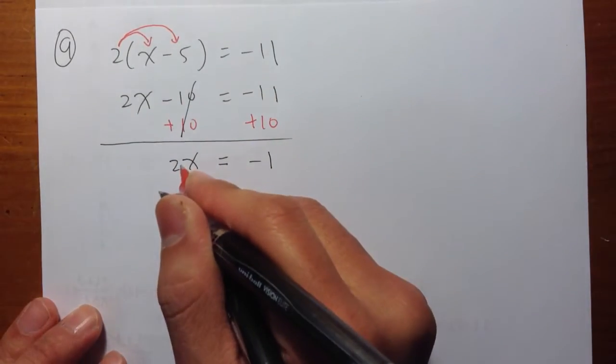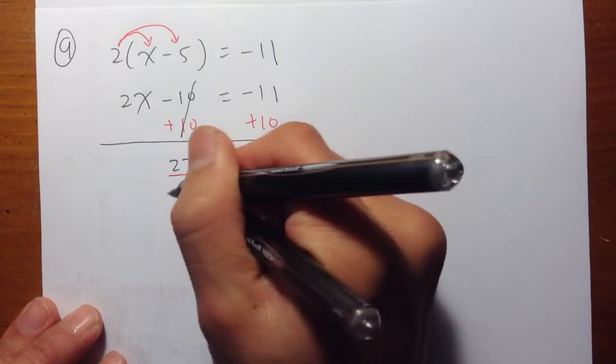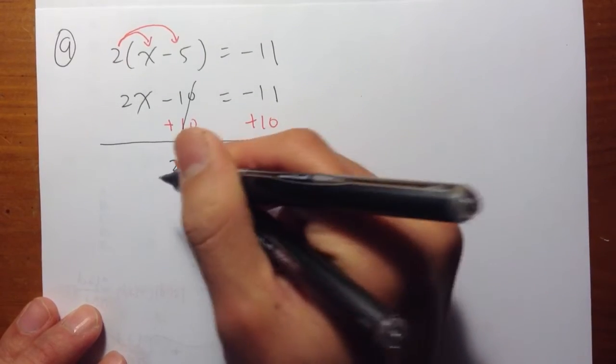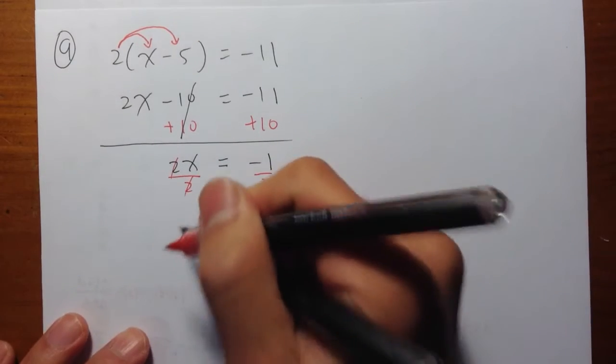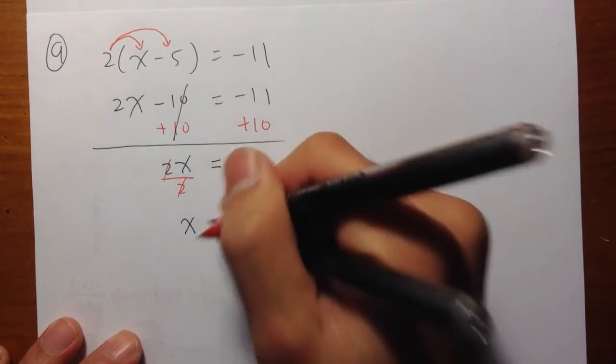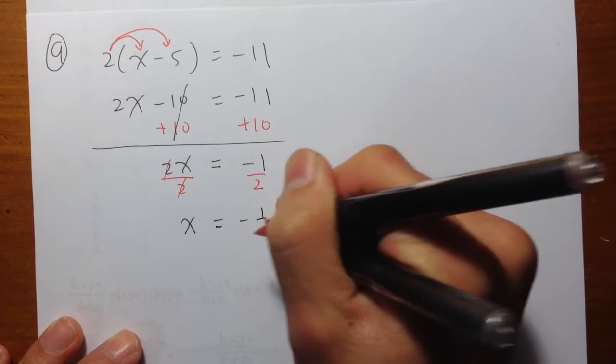Now I need to solve for x. Since I have a multiplication first, I'm going to divide both sides by 2. This 2, this 2 and 2 cancel out to be 1. So I just have 1x, that's equal to negative 1 half.